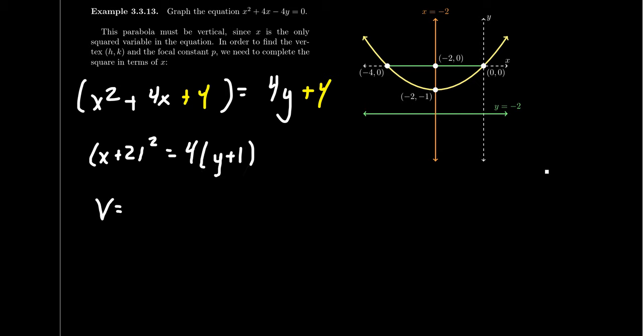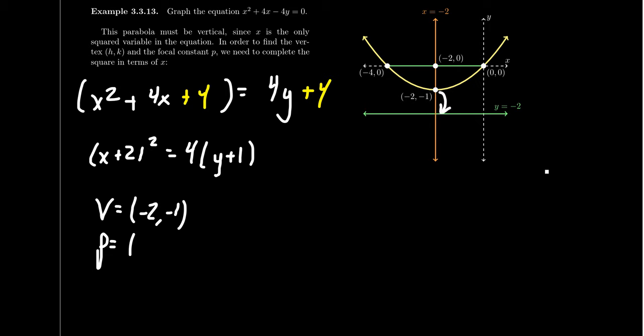The left-hand side factors as (x + 2)², and the right-hand side factors as 4(y + 1). This tells us the vertex is (−2, −1) — you take the opposite of the sign when considering the shift. The focal constant P equals 1, since the coefficient is 4 times P. Because the parabola is vertical, we can start graphing. The focus is 1 above the vertex, so focus is at (−2, 0). The directrix is below at y = −2.